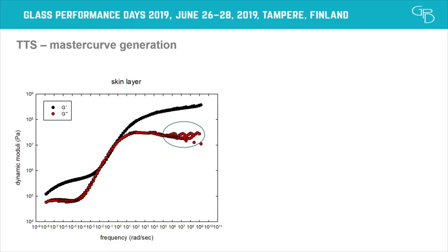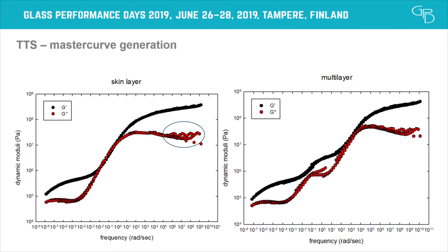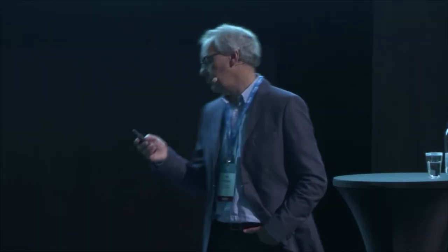For the multi-layer system, there is a similar issue with exact superposition at certain regions. You can also see two transitions in the curve — one for the core and one for the skin — which is expected because you have two different layers with two different mechanical properties.